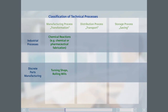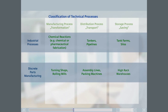Distribution in industrial processes typically makes use of tankers or pipelines. In discrete parts manufacturing, distribution might involve assembly lines and packing machines. Storage in industrial processes includes, for example, tank farms or silos; in discrete parts manufacturing, for example, high-rack warehouses.